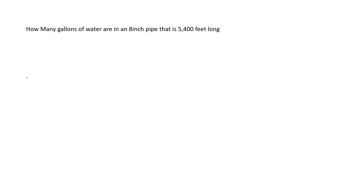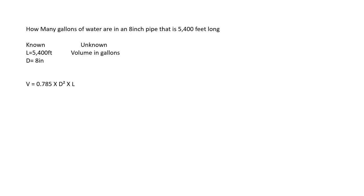How many gallons of water are in an 8-inch pipe that is 5,400 feet long? Let's pull out our knowns and unknowns from our word problem to make it easier to keep track of. What we know is the length of the pipe is 5,400 feet and the diameter of the pipe is 8 inches. Again, we are looking for volume in gallons. The volume of a pipe is equal to 0.785 times the diameter squared times the length, and remember our answer is in cubic feet, so our units must all be in feet.